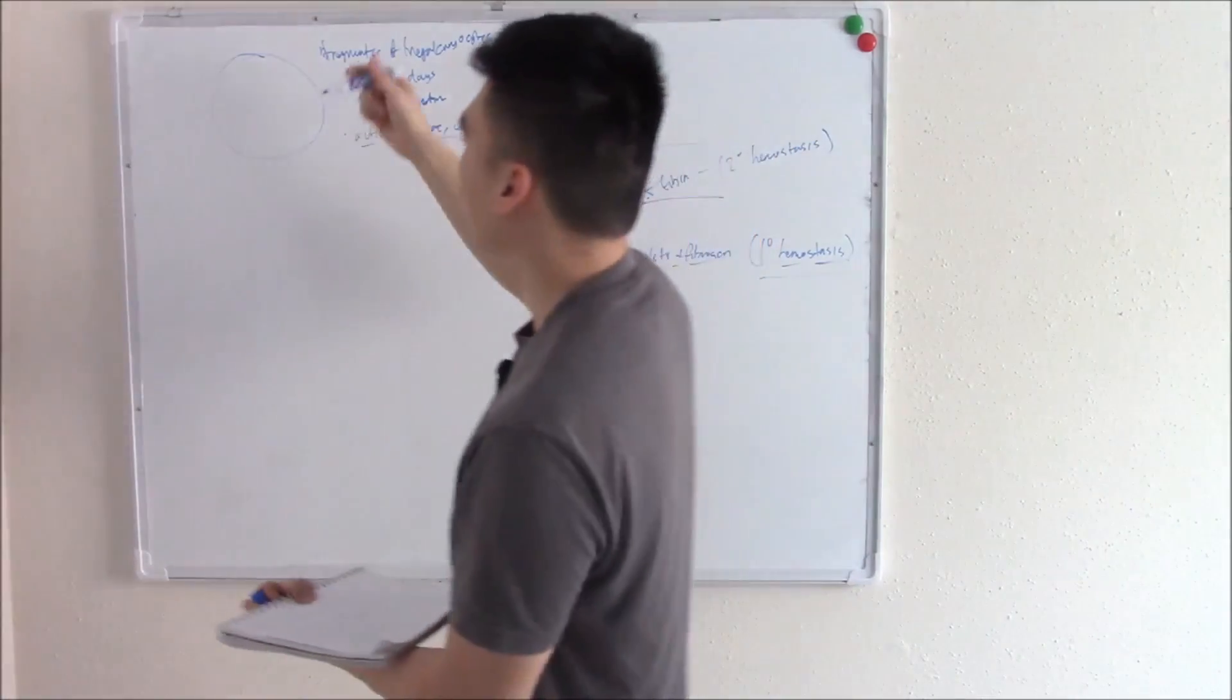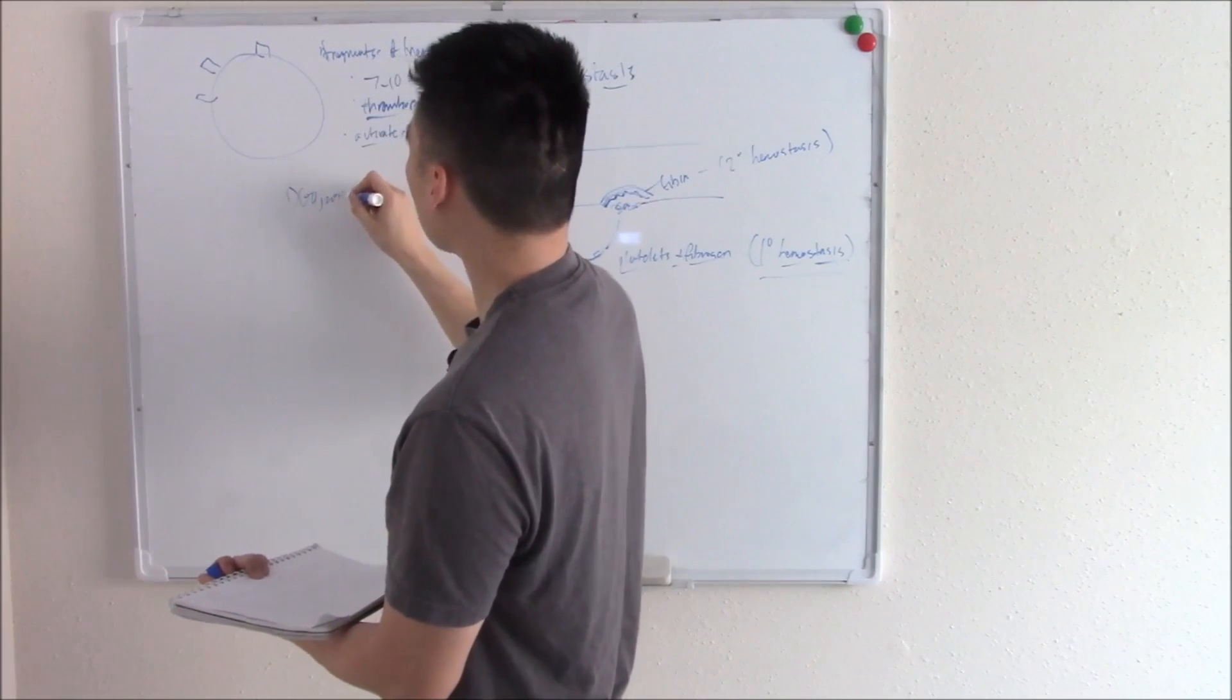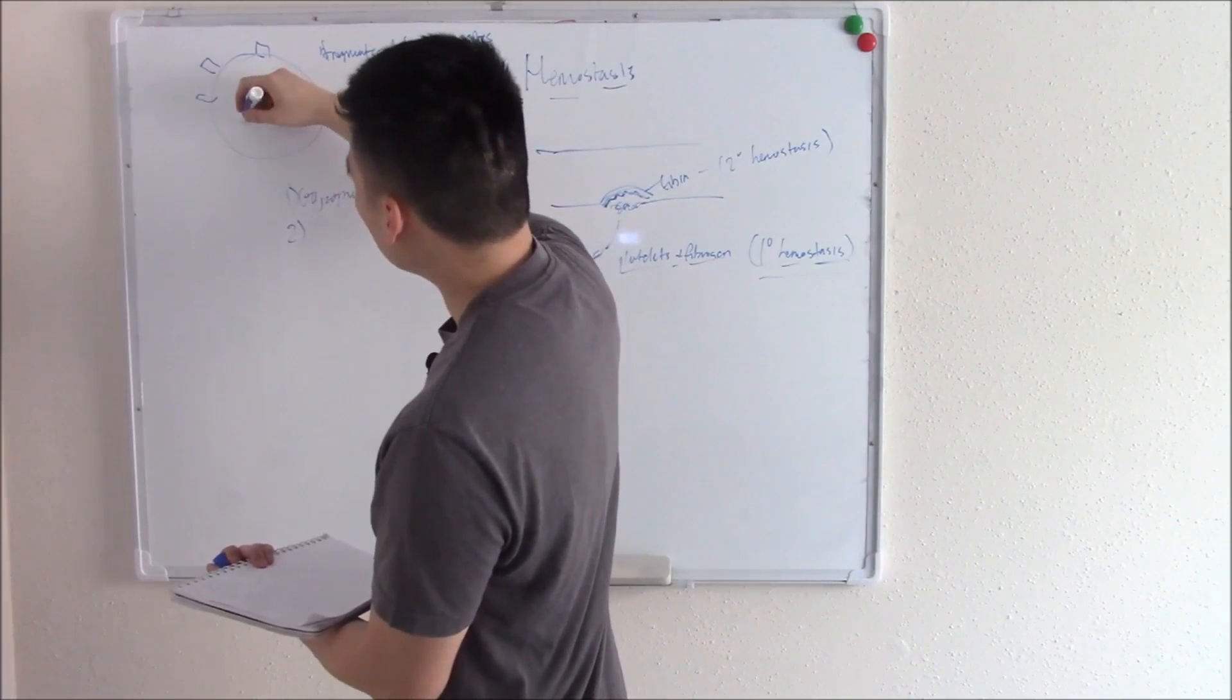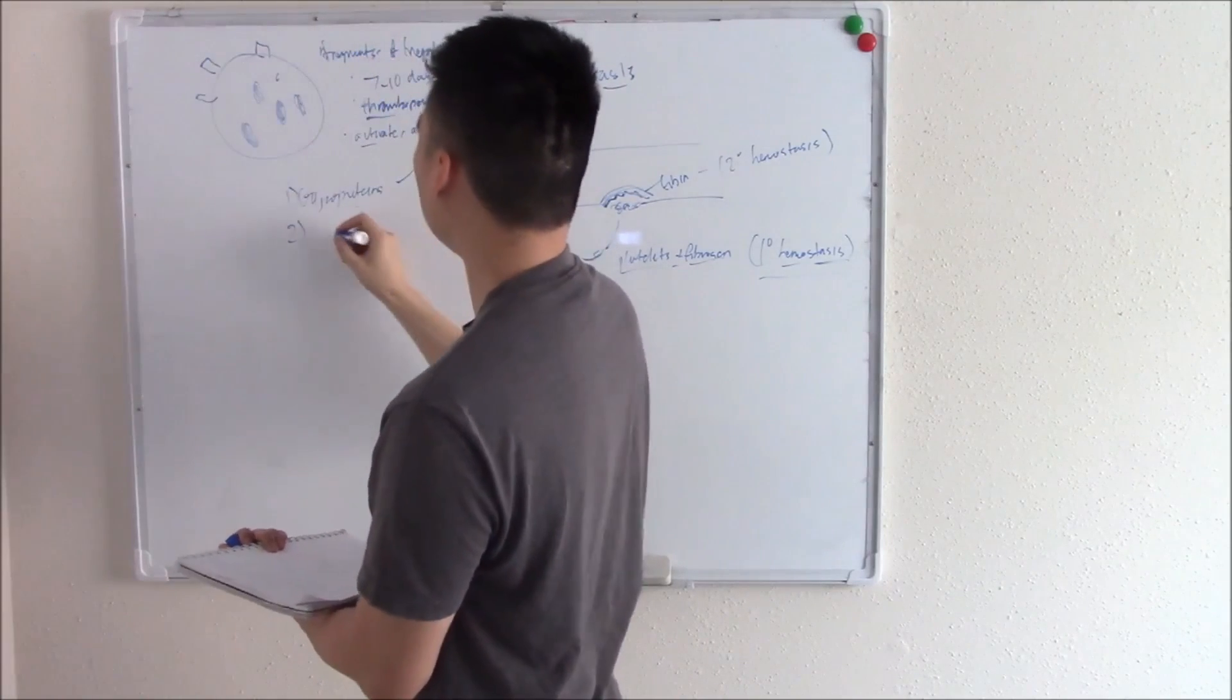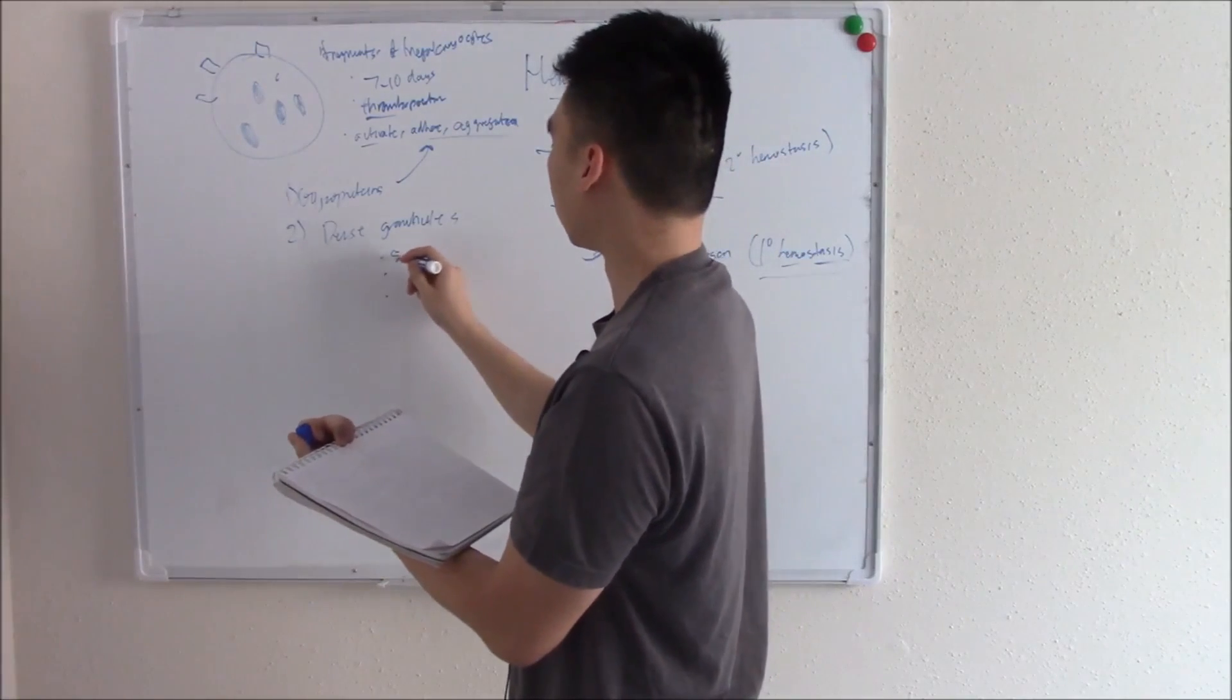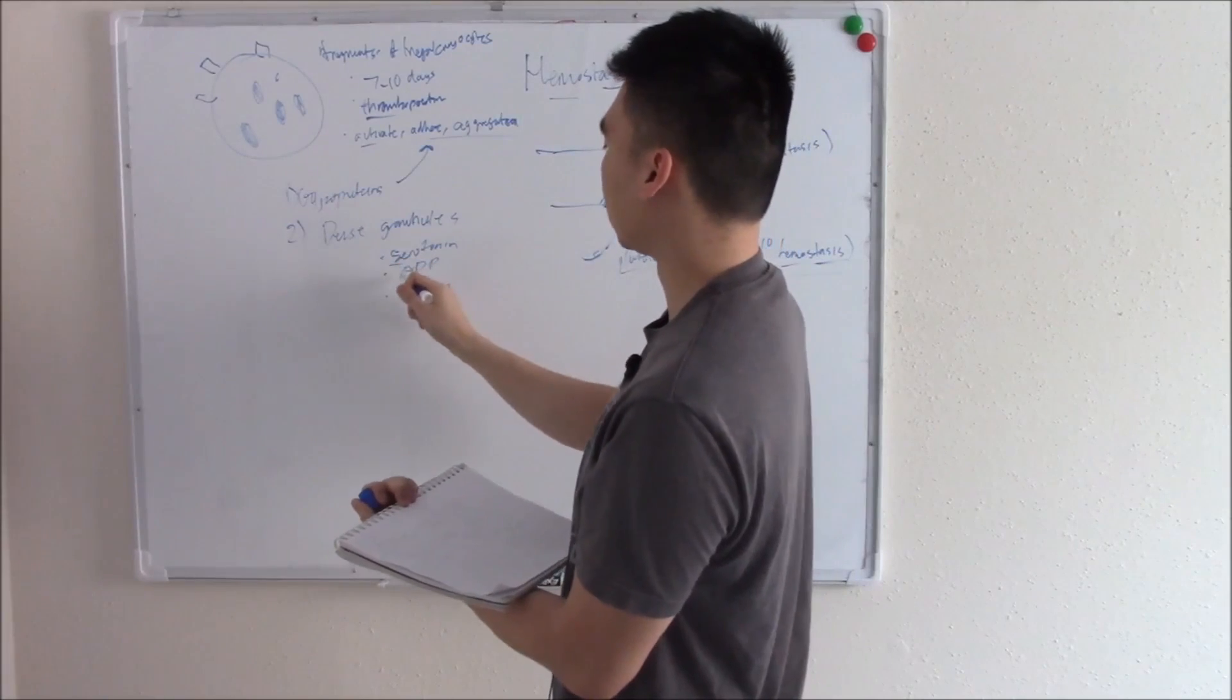Looking at the structure a little more in detail, at your surface you have these proteins called glycoproteins, and those glycoproteins play a big role in activating, adhering, aggregating. Inside your platelet you have granules. You can have dense granules, and dense granules contain things like serotonin, ADP, and calcium. An easy way to remember is S-A-C, sacs.